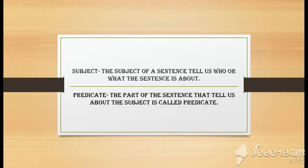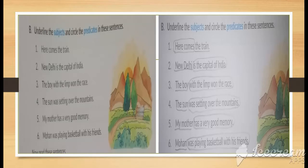What do you mean by the predicate? The predicate is that part of the sentence that tells us about the subject. Now I will explain this with the help of exercises given in your book. As you can see, 'here comes the train' — the train is the subject and 'here comes' is the predicate.